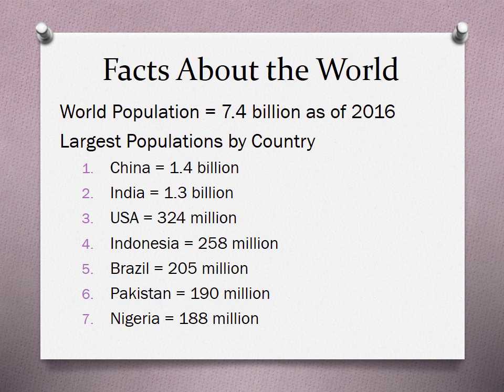Pakistan, 190 million; Nigeria, 188 million. So you'll see that within the first two largest populations, China and India, you're looking at almost a third of the entire population of the world in these two countries.